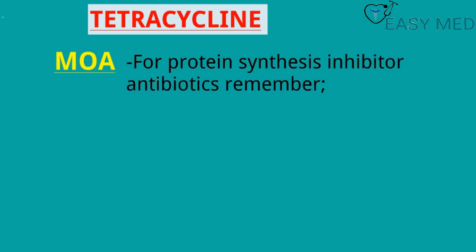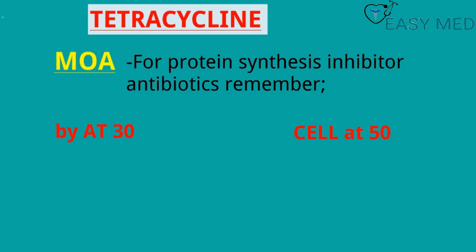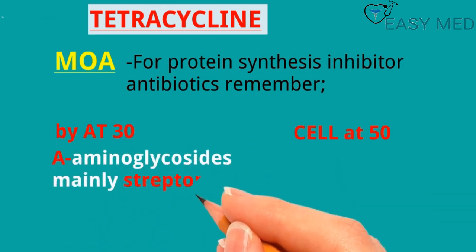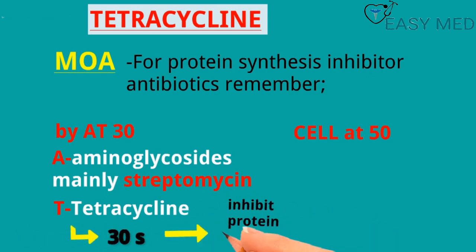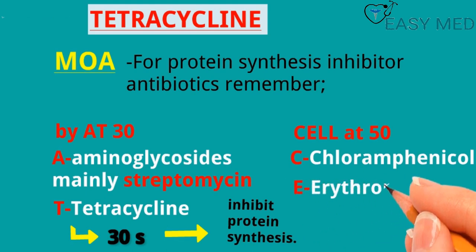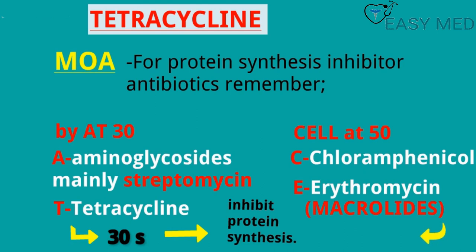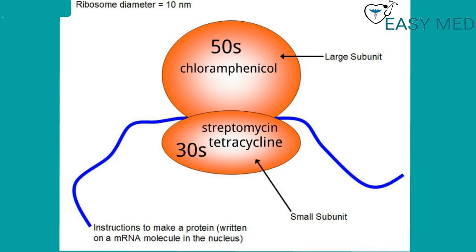For mechanism of action, for protein synthesis inhibitor antibiotic drugs, remember: 'bi at 30, cell at 50.' 'Bi at 30' means A stands for aminoglycosides (especially streptomycin) which bind at the 30S ribosome, and T stands for tetracycline which also binds to the 30S subunit. 'Cell at 50' — C represents chloramphenicol and E represents erythromycin and all macrolides, which bind to the 50S ribosome and inhibit protein synthesis.